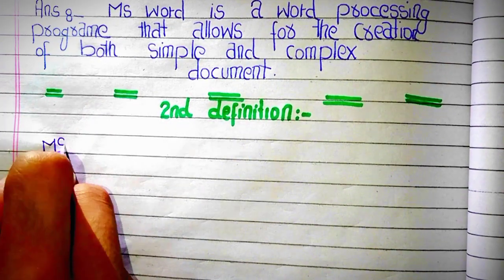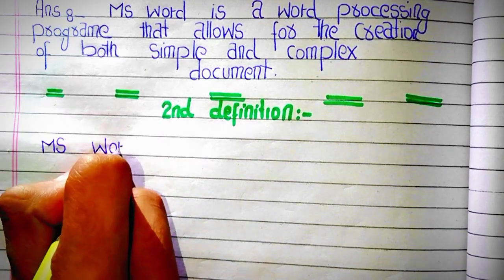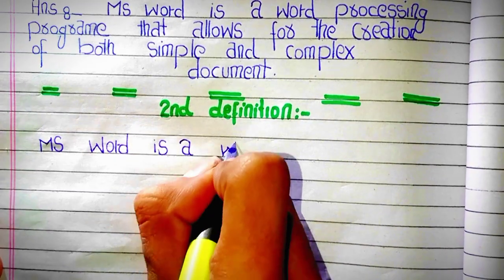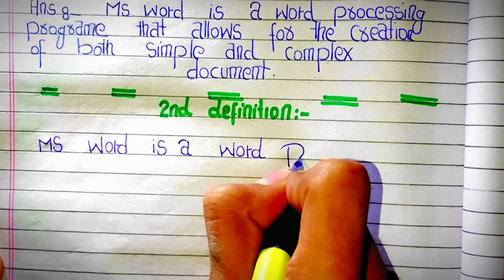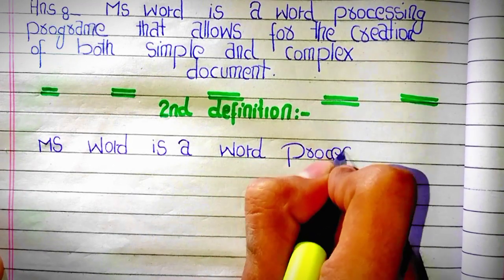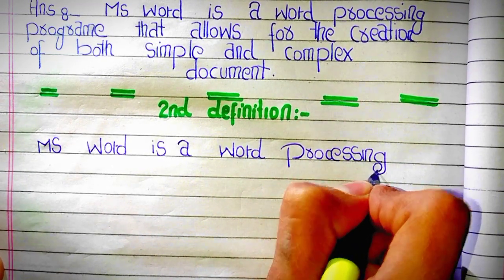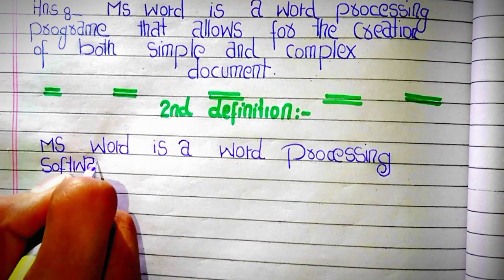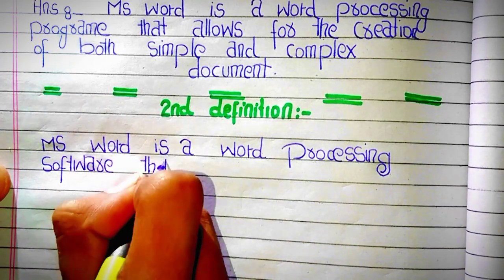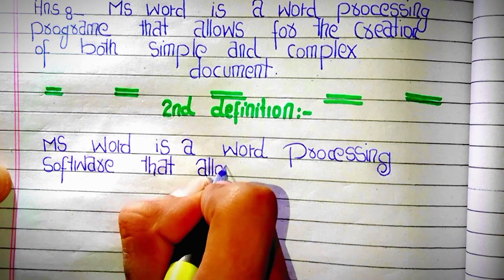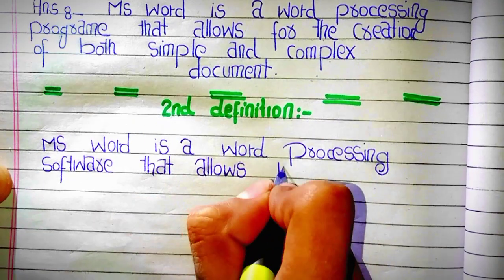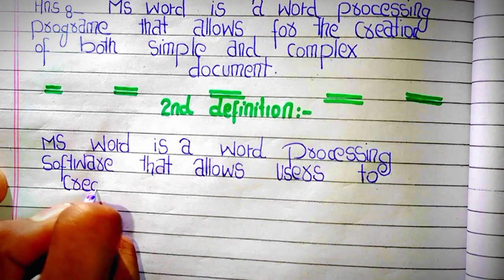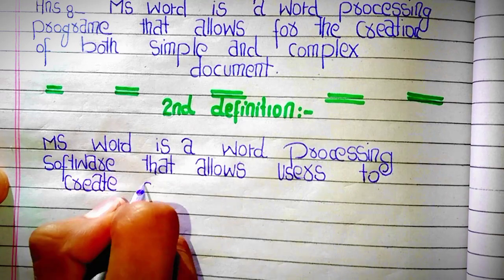The second definition of MS Word is: MS Word is a word processing software that allows users to create and edit text documents.